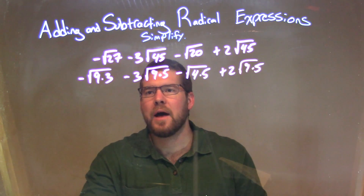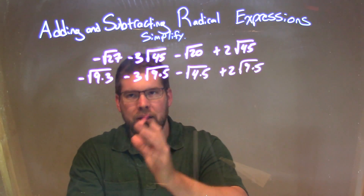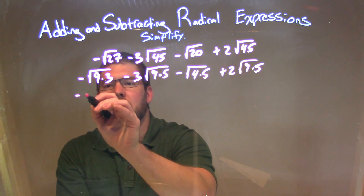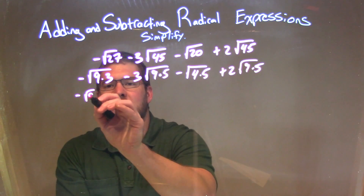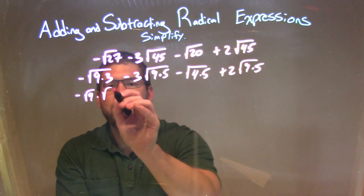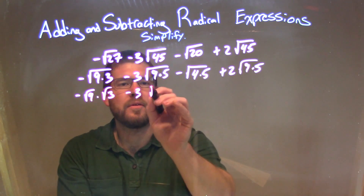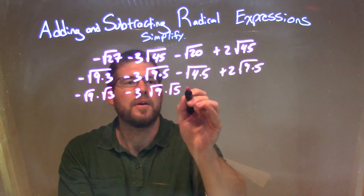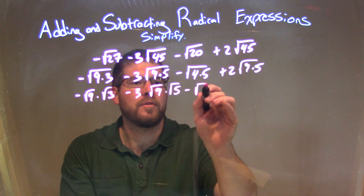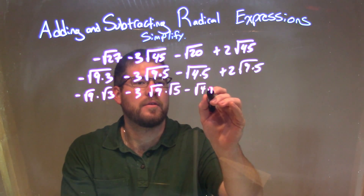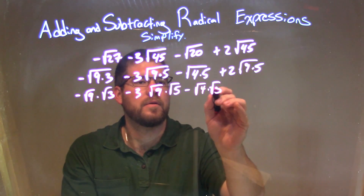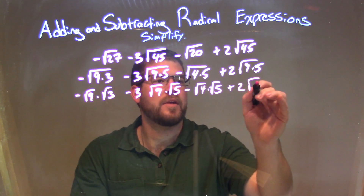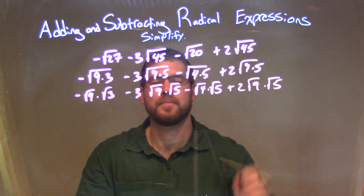So now we can separate each one of these to its own individual square roots. So we have minus the square root of 9 times the square root of 3, minus 3 square root of 9 times the square root of 5, minus the square root of 4 times the square root of 5, plus 2 times the square root of 9 times the square root of 5.